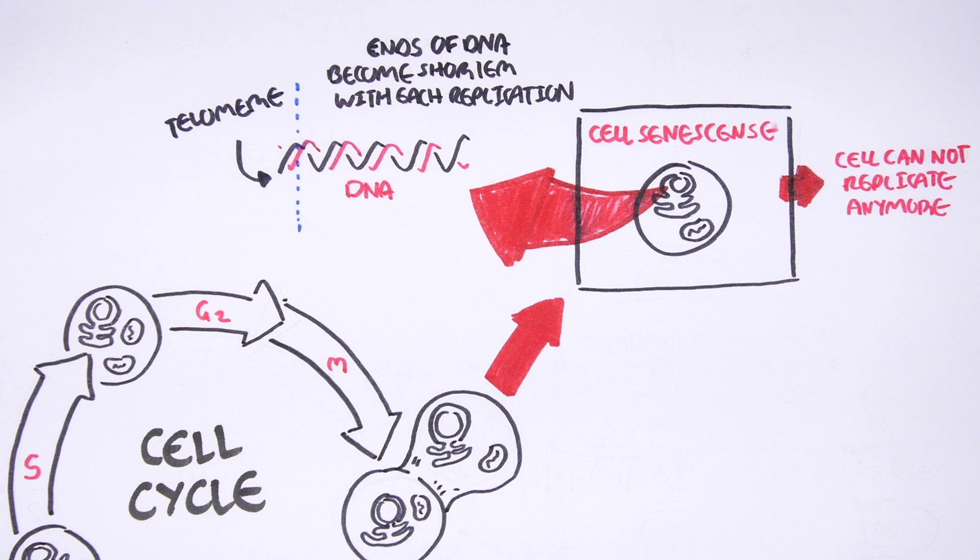So if the ends of the DNA do not become shorter, it would mean that we would be immortal. And interestingly enough, cancer cells are immortal because their DNA do not get shorter like normal cells.